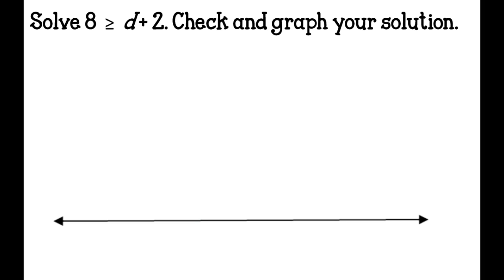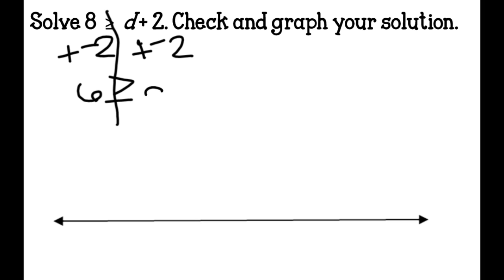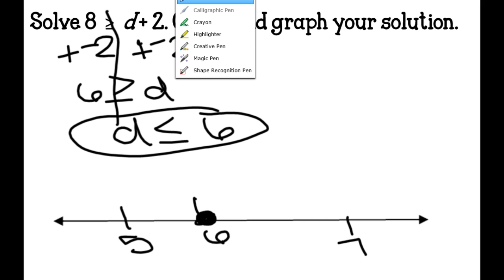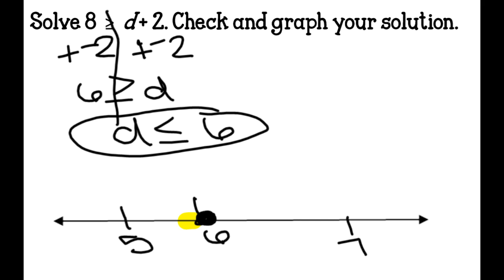Solve 8 is greater than or equal to D plus 2. Draw the line and add negative 2 to both sides — what you do to one side, you must do to the other. 8 plus negative 2 is 6, so 6 is greater than or equal to D. Using the flip it, switch it, rearrange it rule, D is less than or equal to 6. I graph with a closed circle on 6 and shade everything to the left.